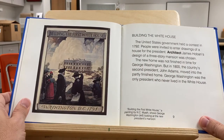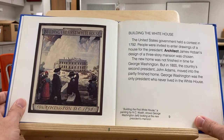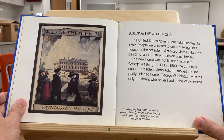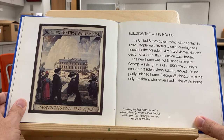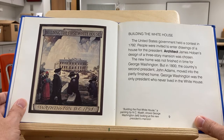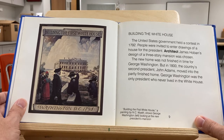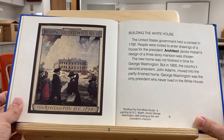The United States government held a contest in 1792. People were invited to enter drawings of a house for the President. Architect James Hoban's design of a three-story mansion was chosen. The new home was not finished in time for George Washington, but in 1800 the country's second President, John Adams, moved into the partly finished home. George Washington was the only President who never lived in the White House.